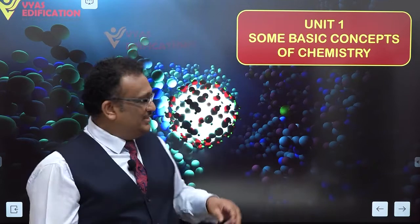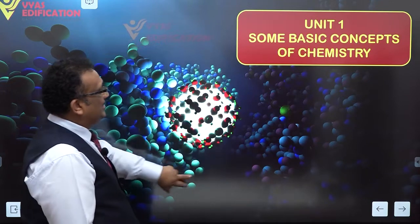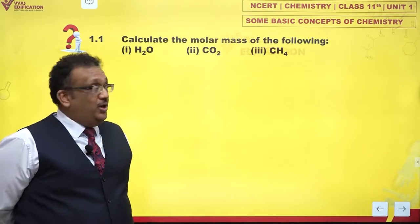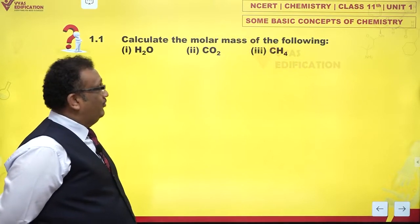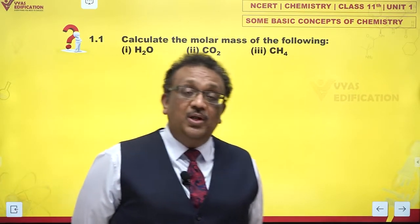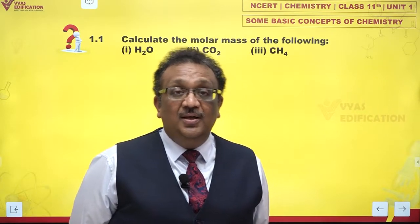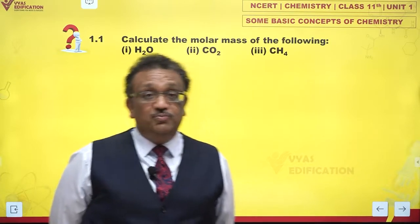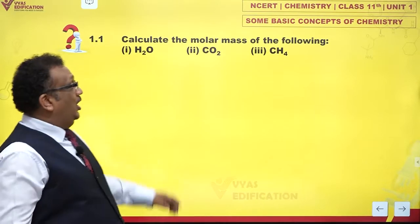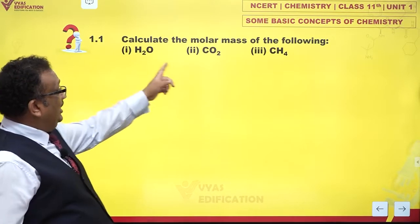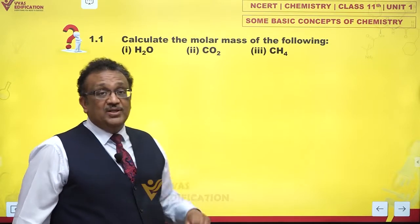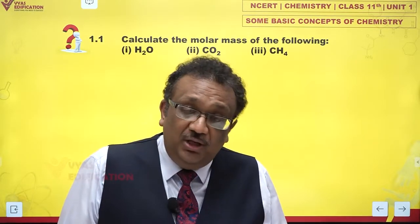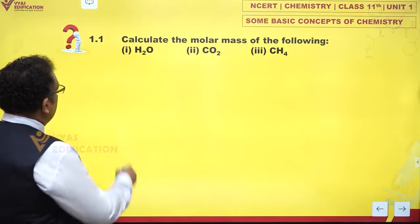Let's begin without wasting time. Let's take a look at the first question: Calculate the molar mass of the following. What is molar mass? Molar mass means mass of one mole, and if you have molecules, mass of one mole of molecules. We add molar masses of atoms so that we get molar masses of molecules. That's very simple.